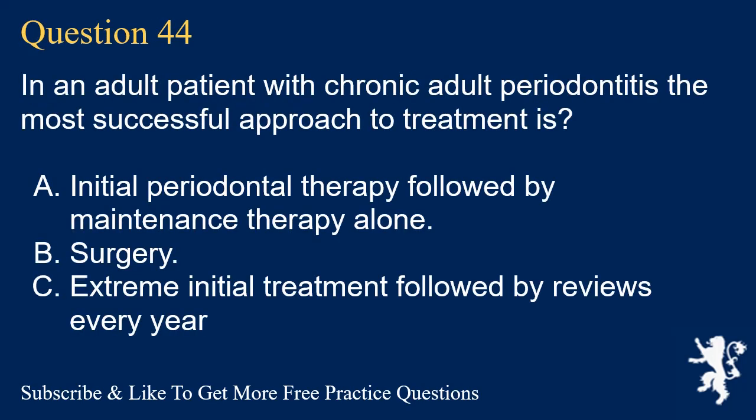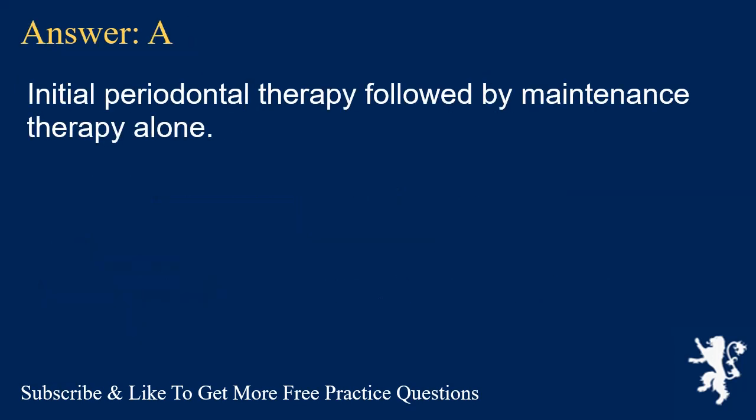Question 44. In an adult patient with chronic adult periodontitis, the most successful approach to treatment is? A. Initial periodontal therapy followed by maintenance therapy alone. B. Surgery. C. Extreme initial treatment followed by reviews every year. Answer: A. Initial periodontal therapy followed by maintenance therapy alone.